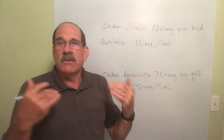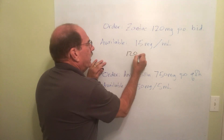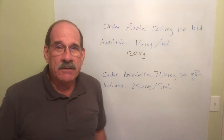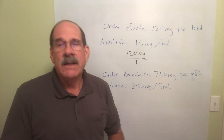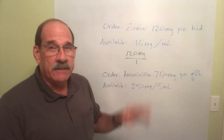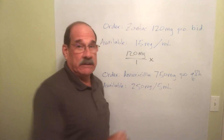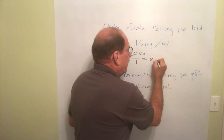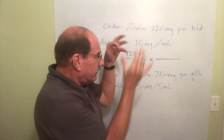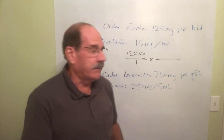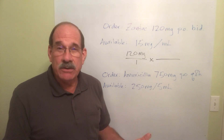Here's the procedure we did on the previous video. Here's the way to do it: write the order down — 120 milligrams — and make it a fraction by putting it over one. Any number over one is the same number; that changes nothing. Next step: put an X there for multiply, then put a line — put the line first, don't put numbers yet. What goes in the second right-hand fraction is the dosage strength — the supply dosage, what you have available.